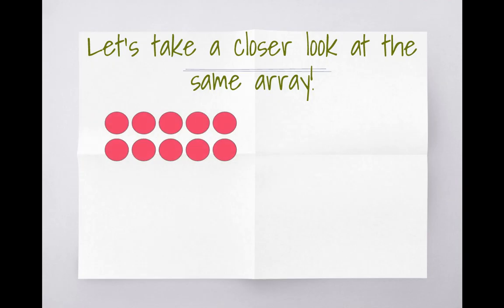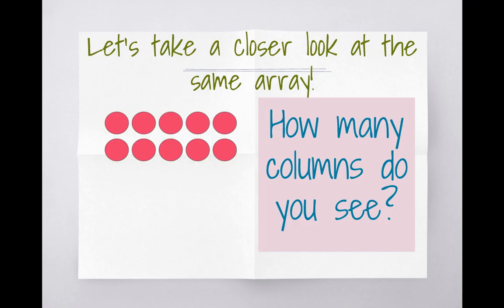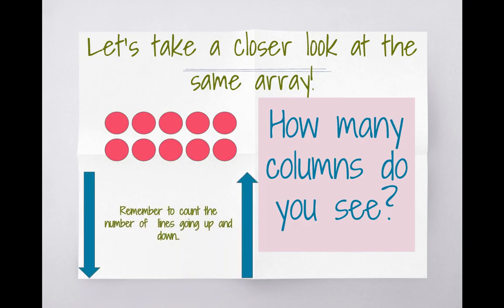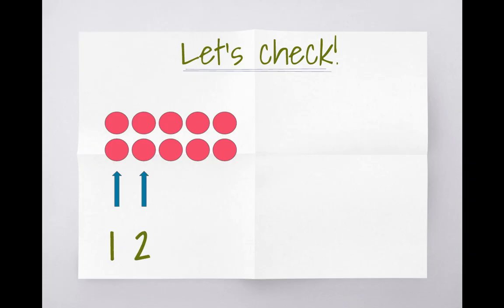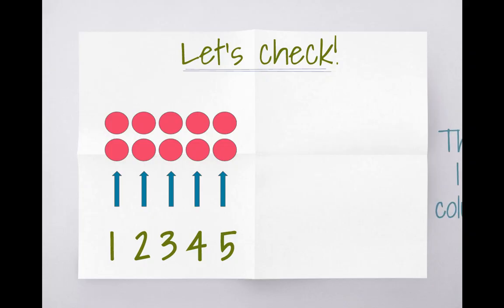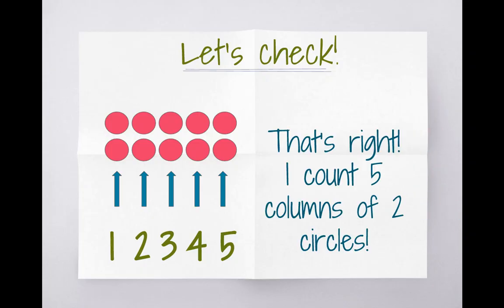Now let's look at that same array. This time I want you to look only at the columns. How many columns do you see? Don't forget, columns are vertical so they go up and down. Let's check your work.